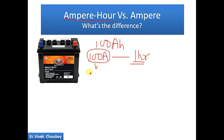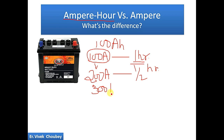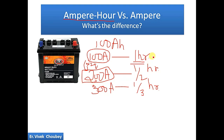In another terms, if we double the rate of current — say we take 200 amps from the battery — the battery will take half an hour to discharge completely. If we take 300 amps of current, the battery will discharge in one-third of an hour. So as we increase the amount of amps we are taking, if we double the current the time is halved, and if we take three times the current the time is one-third.